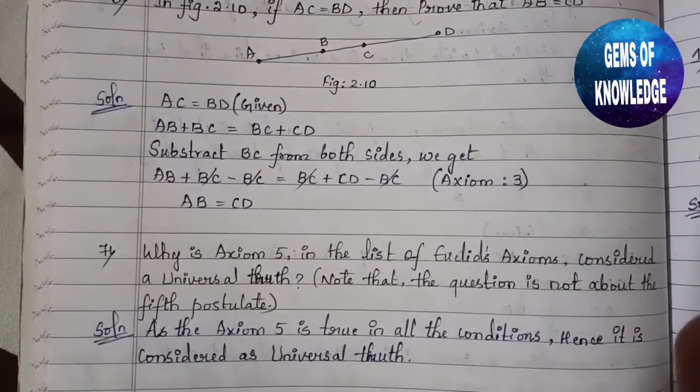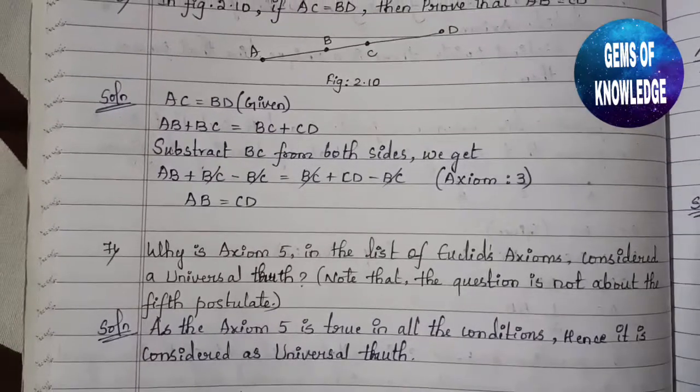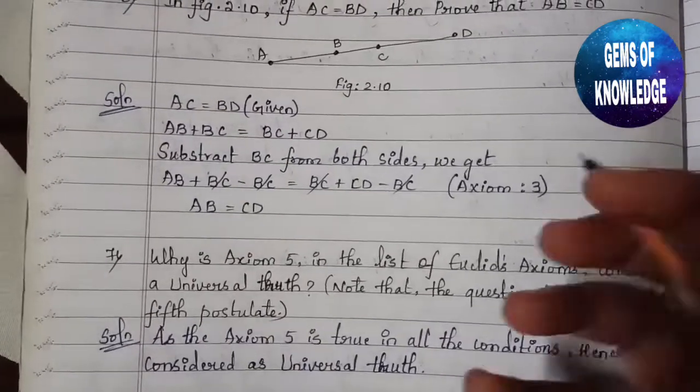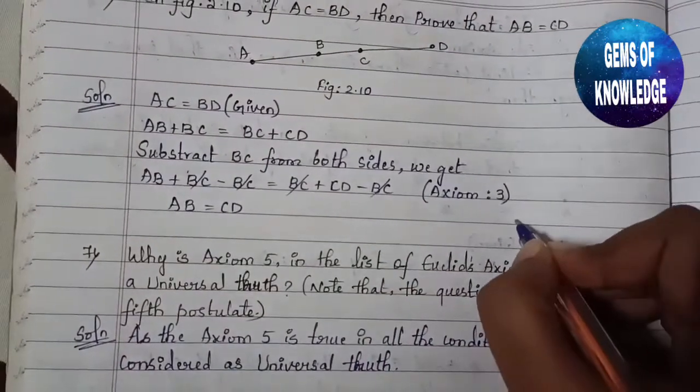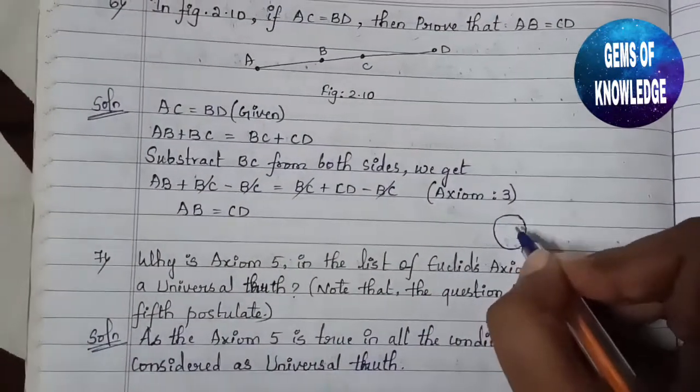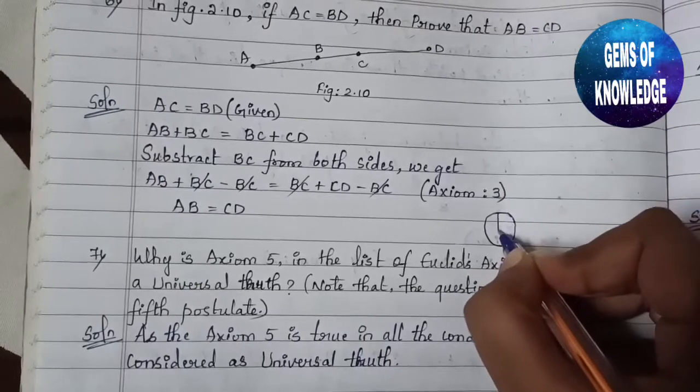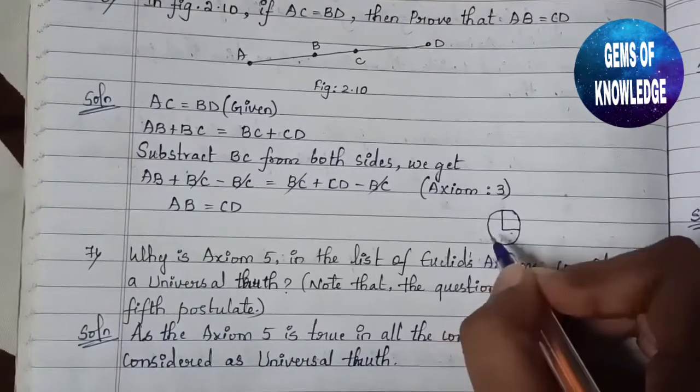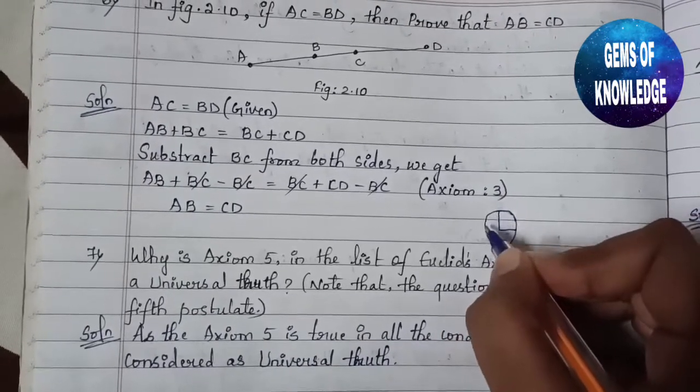Euclid's fifth axiom states that the whole is greater than the part. For example, if this is a circle, this is a whole. If you are taking out some part from this, you can see...